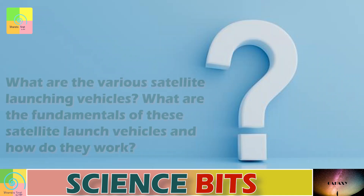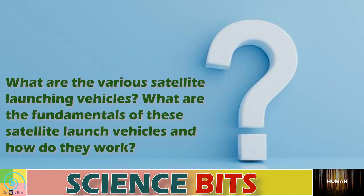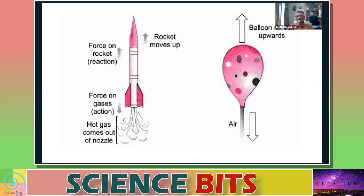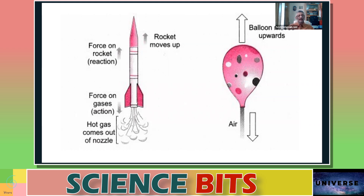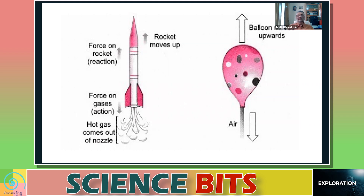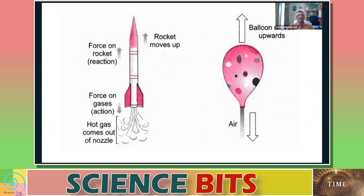Today's question is about the fundamentals of satellite launch vehicles. Whoever it is — whether India, US, Russia, or China — it's the same. It's something we see at our parties. When you are blowing up a balloon and accidentally you leave it, the balloon flies away. The air from the inflated balloon comes out in one direction, and because of that, a force acts on the balloon in the opposite direction — the balloon starts moving in the opposite direction. We would have heard this as Newton's third law.